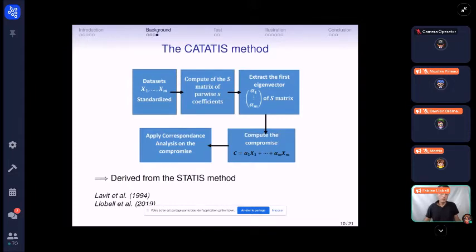This can be achieved by the Frobenius norm. We compute the matrix of the Ochiai coefficients in order to extract the first eigenvector, which is useful to compute the compromise since the compromise is the weighted sum of the subject datasets. And a subject in agreement with the panel will have a high weight. And contrariwise, a subject not in agreement will be down-weighted. And the final step is to apply a correspondence analysis on the compromise in order to have a map with the products and the attributes. So this method is clearly derived from the STATIS method and can be seen as an adaptation of the STATIS method for the check-all-that-apply data.